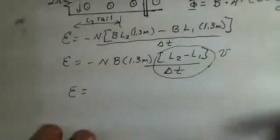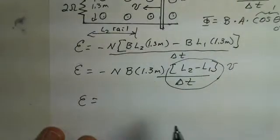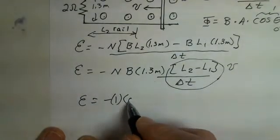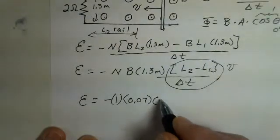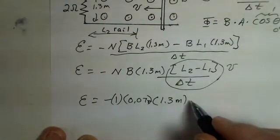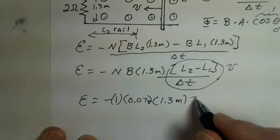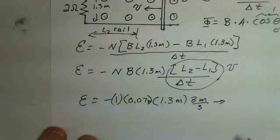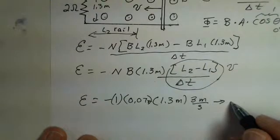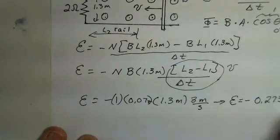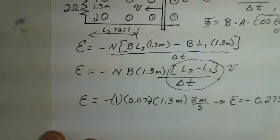In doing this calculation, our EMF would be found with 1 for the number of loops of wire - it's just one rail. We have 0.07 teslas, 1.3 meters for the width, and a velocity of 3 meters per second. Take a pause here and use your calculator. I came up with EMF of minus 0.273 volts. That's the size of the EMF that's induced by this motion, the fact that we're reducing the area.